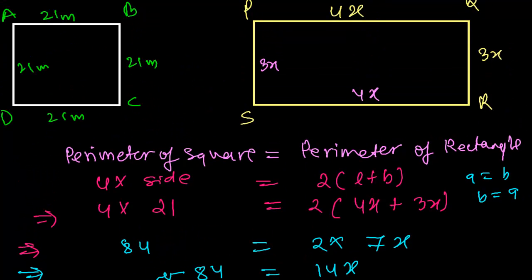Therefore I can say now the length is 4 times 6, that is 24 meter. And the breadth is 3 times x, that is 3 times 6, that is 18 meter. So our length is 24 meter and the breadth is 18 meter.